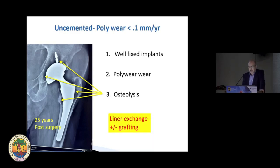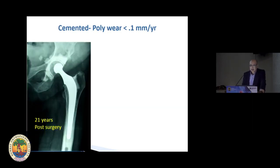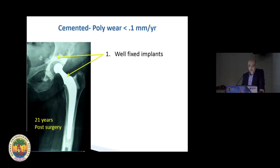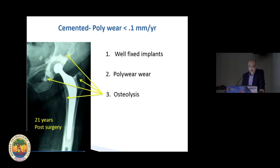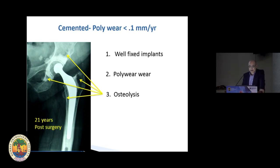The answer for this sort of situation is a liner exchange with or without bone grafting. In a similar situation — 21 years post a cemented hip — again you see well-fixed implants, poly wear, and osteolysis in the cemented cup. Usually it occurs around the rim of the cup and in the ischium and along the proximal femur.